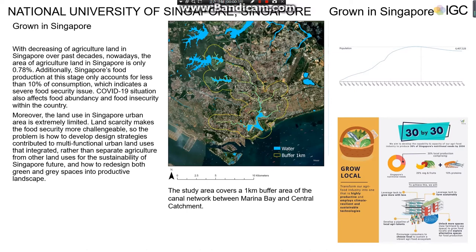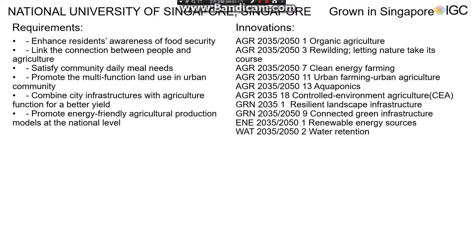Therefore, the problem is how to develop a design strategy contributing to multifunctional urban land uses that integrate rather than separate agriculture from other land uses for the sustainability of Singapore's future, and how to redesign both green and gray spaces into productive landscape. In this project, we are focusing on a study area covering a 1km buffer area of the canal network between Marina Bay and Central Catchment in Singapore. Our goal is to achieve six requirements centered by social awareness and linkage to food, multifunction land use, community needs, and a new urban infrastructure typology combined with agriculture.